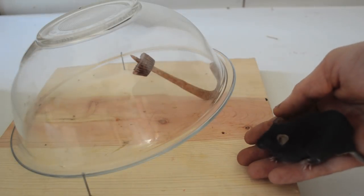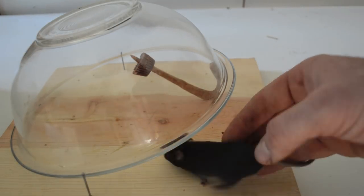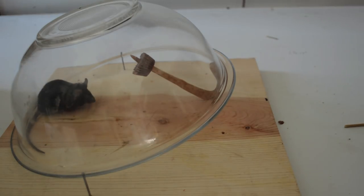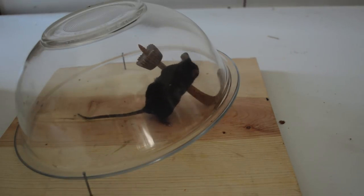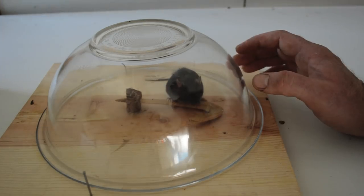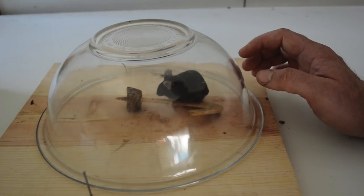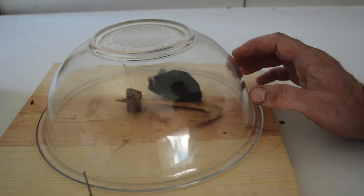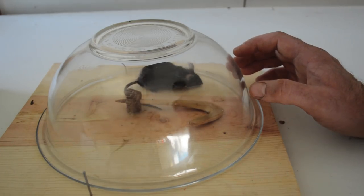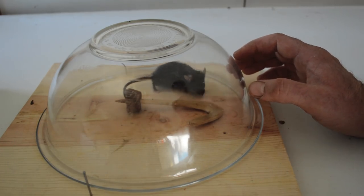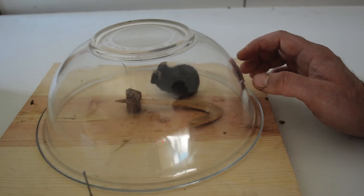Let's test this trap out with our black mouse. His name is Batman. This trap works really well. Batman went in there, put his weight on the trigger and the bowl came down. Let's go set this up in the barn with motion cameras. See if we can get some wild mice. I'm going to use Tootsie Roll candy as bait for them.